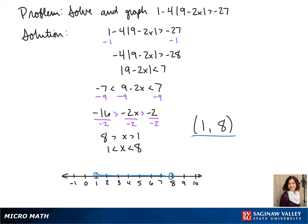Then to graph this we have open circles at both 1 and 8, again since they are not included in the interval, and all of our values are between them.